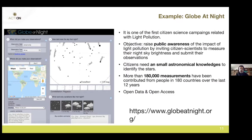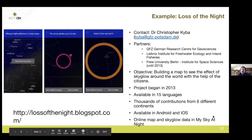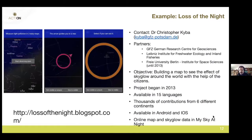However, there's a problem: if you see a star like Aldebaran, you might not know what it is. You need expertise — you have to train citizens — so the quality of the results is not ideal.